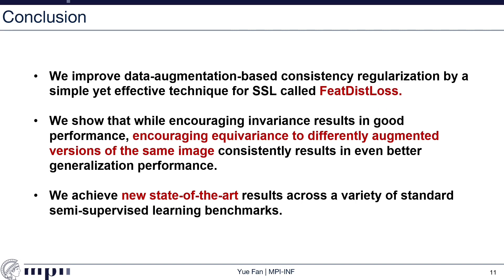To conclude, in this paper we improve data augmentation-based consistency regularization by a simple yet effective technique for semi-supervised learning called feature distance loss, which regularizes the distance between feature representations from differently augmented images of the same class. We showed that while encouraging invariance results in good performance, encouraging equivariance to differently augmented versions of the same image consistently results in even better generalization. Furthermore, we provide a comprehensive evaluation study on different distance functions and augmentations. In combination with other strong techniques, we achieve new state-of-the-art results across a variety of standard semi-supervised learning benchmarks, specifically in low-data regimes. Thank you for your attention.